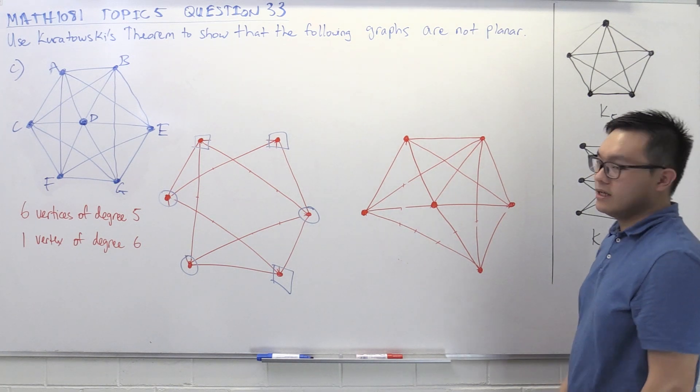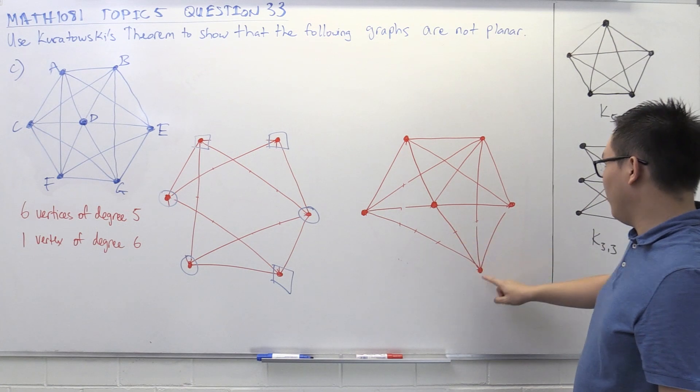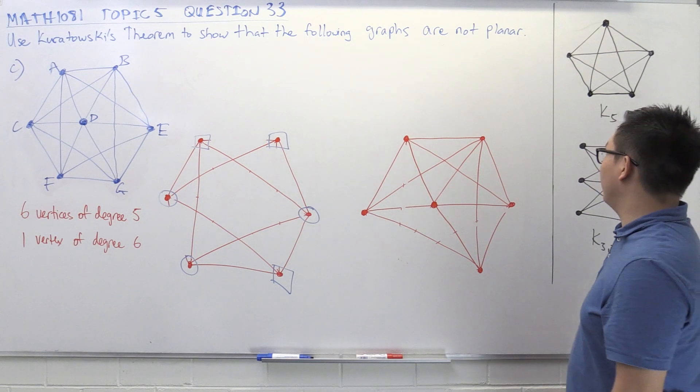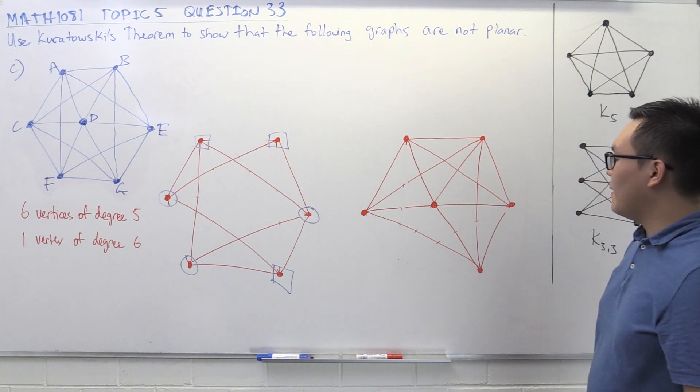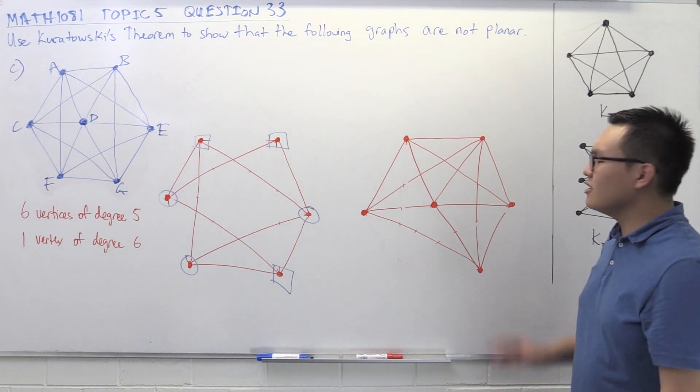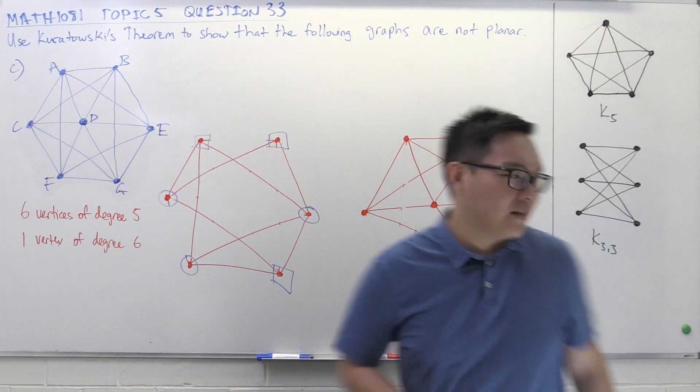We've got six vertices, each having the same degree. Well, some of them have degree four, they all have degree four except the one in the middle, which has degree five. Now, when we look at this graph, we can kind of see that this looks a little bit like a redrawing of K33, which we might have seen before.